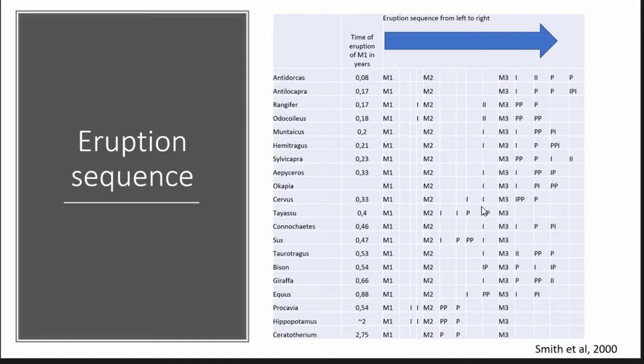Here you can see a table with the eruption sequence of various species — Antidorcas, Giraffa, and Equus. What you can see consistently is that the M1 erupts before the M2, and then the M3 is the last of the molars to emerge.